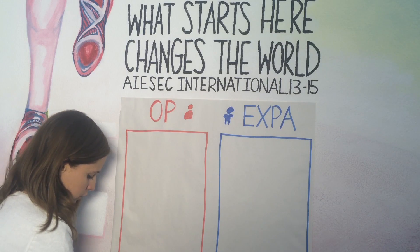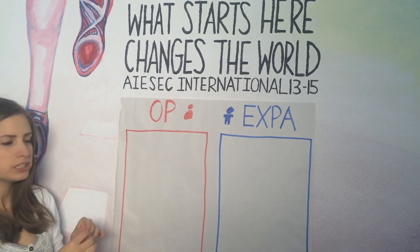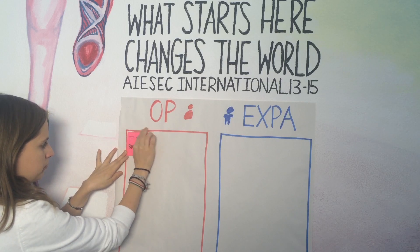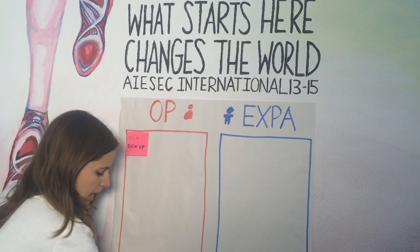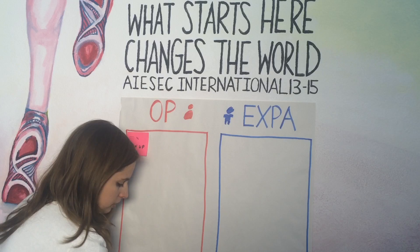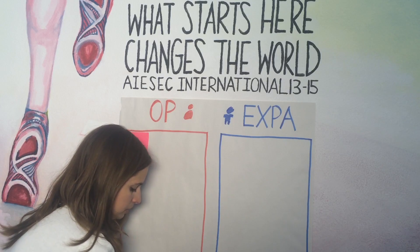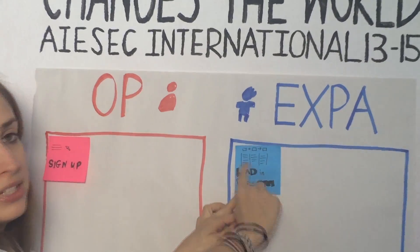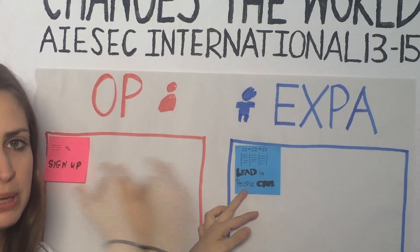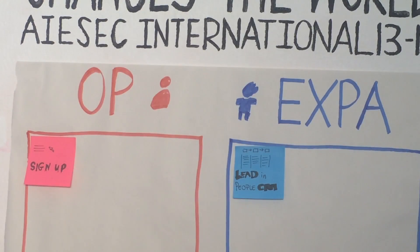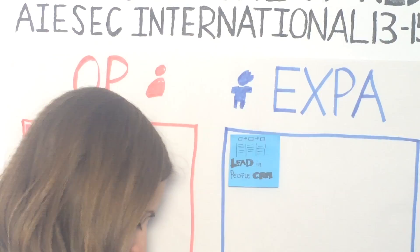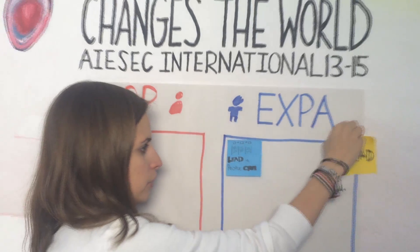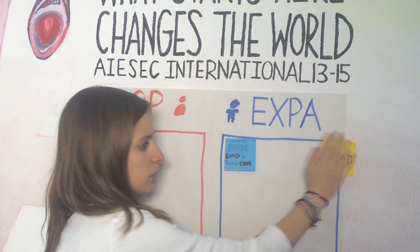First of all, a student goes to the Opportunities Portal and signs up. This is the first thing that happens, and at this moment he becomes a lead in EXPA in the People CRM. In the People CRM the ISACer can immediately see that there is a new lead.